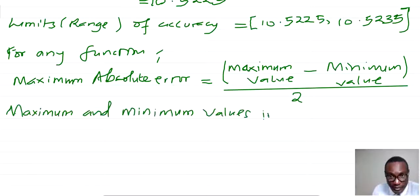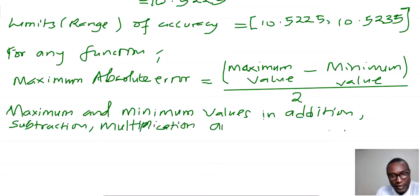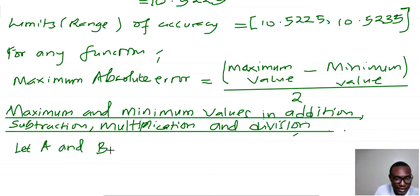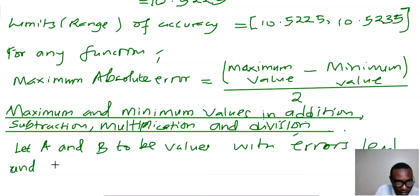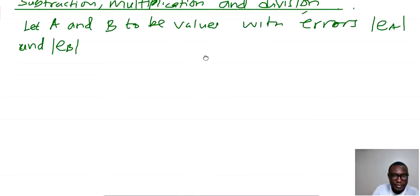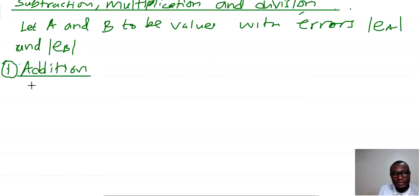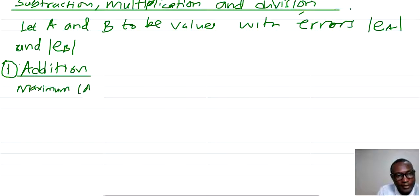Let capital A and capital B be values with errors EA and EB in magnitude. We are going to use that to determine the error in addition, multiplication, subtraction, and division. Let us summarize them starting with addition, looking at two things: maximum and minimum. So let's start with the maximum of A plus B.